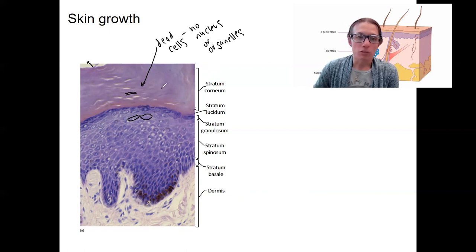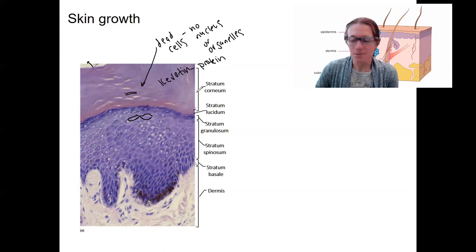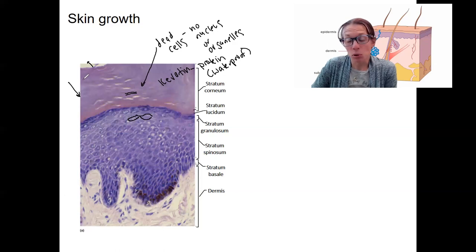They have no nucleus and no organelles. That's why they're so flat. They're almost stratified spaghetti. They are, though, filled with keratin. Keratin is the protein that they made back when they were alive. They can't make protein once they don't have organelles or nucleus anymore. The keratin is what makes our skin waterproof. So it's a waterproof barrier so that water can't go through here like it can somewhat through most cells.